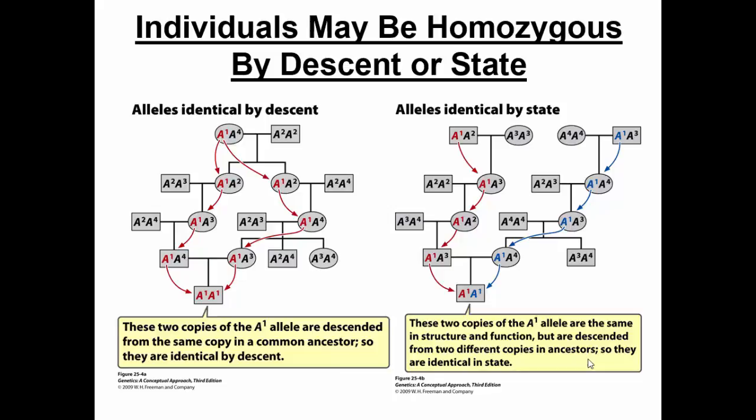If we have two individuals, we ask: are they homozygous by descent or by state? With four alleles in the population we label them A1, A2, A3, A4 instead of big A and little a. Two individuals can both be A1, A1 — the same genotype — but what matters is whether those alleles are identical by descent or identical by state. Identical by descent means that if you track those A1 alleles backward through lineages, because of inbreeding, they actually came from the exact same ancestor several generations back.